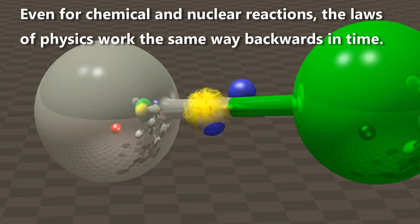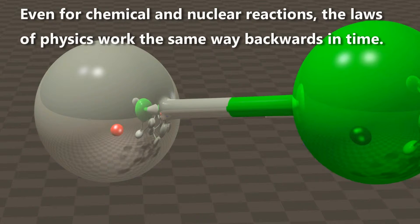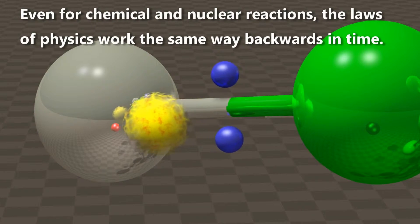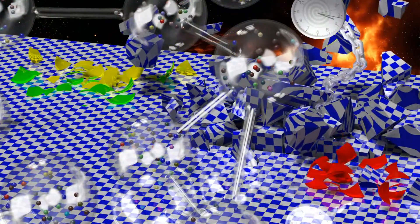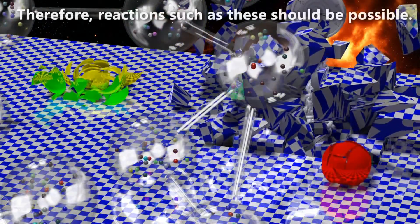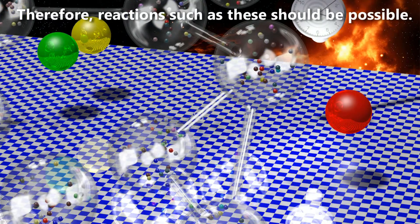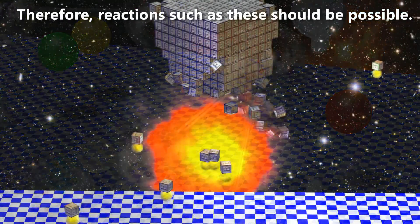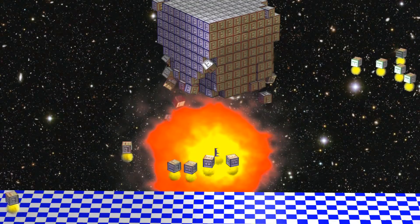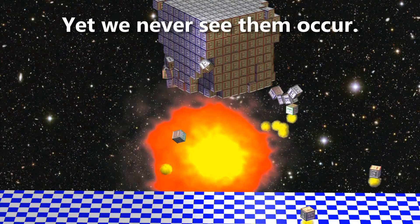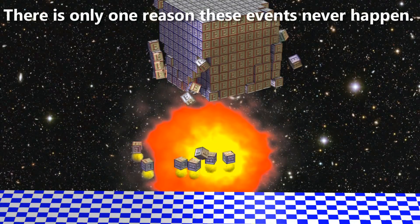Even for chemical and nuclear reactions, the laws of physics work the same way backwards in time. Therefore, reactions such as these should be physically possible. Yet we never see them occur.